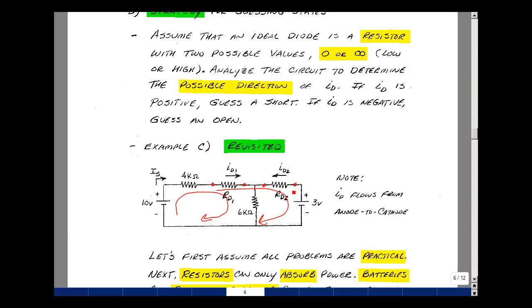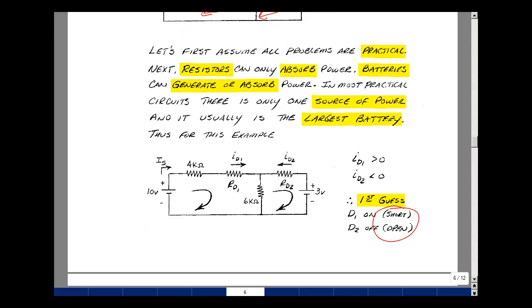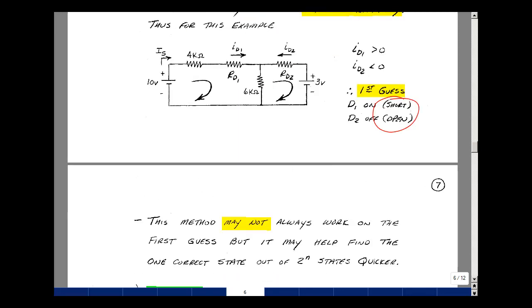The current is flowing from anode to cathode in my guess for diode 1, and it's flowing from cathode to anode in diode 2. That would be my first guess. Guess that the first diode is a short and the second diode is an open. And that's shown here. And obviously that was the case that we did on the fourth guess. Now this may not always work to give you the answer on the first guess, but it might get you closer when you do your second guess based on what you found in the first guess. But we'll definitely cut down on going through all two to the n states.